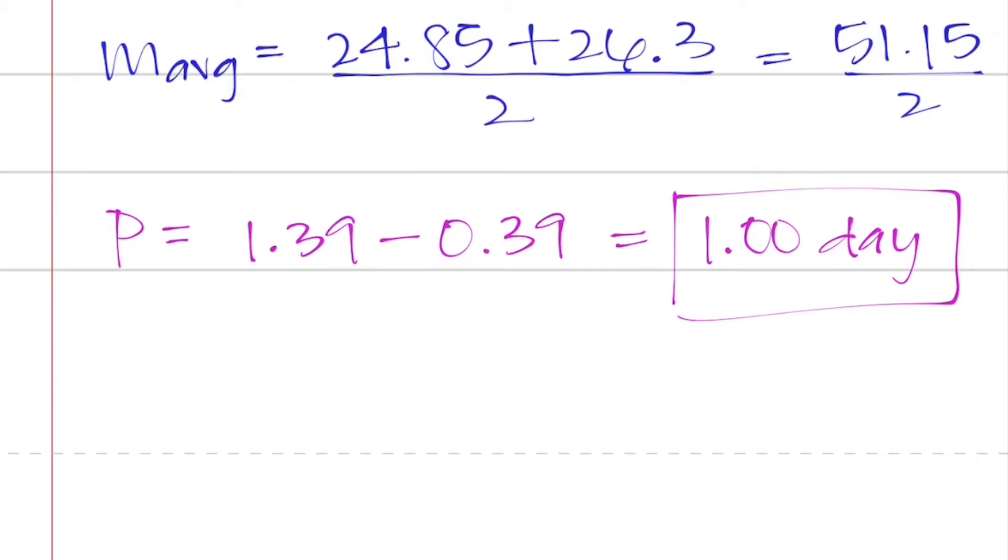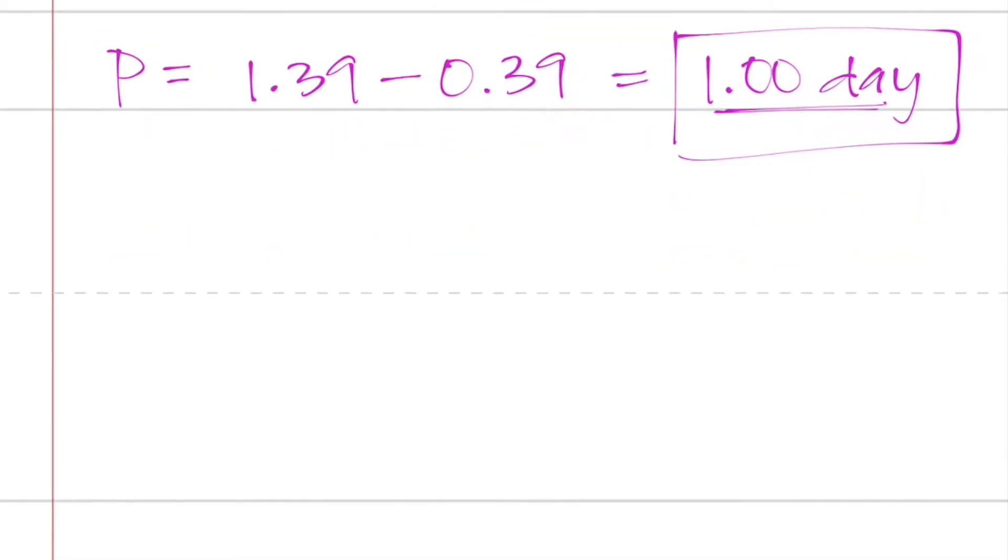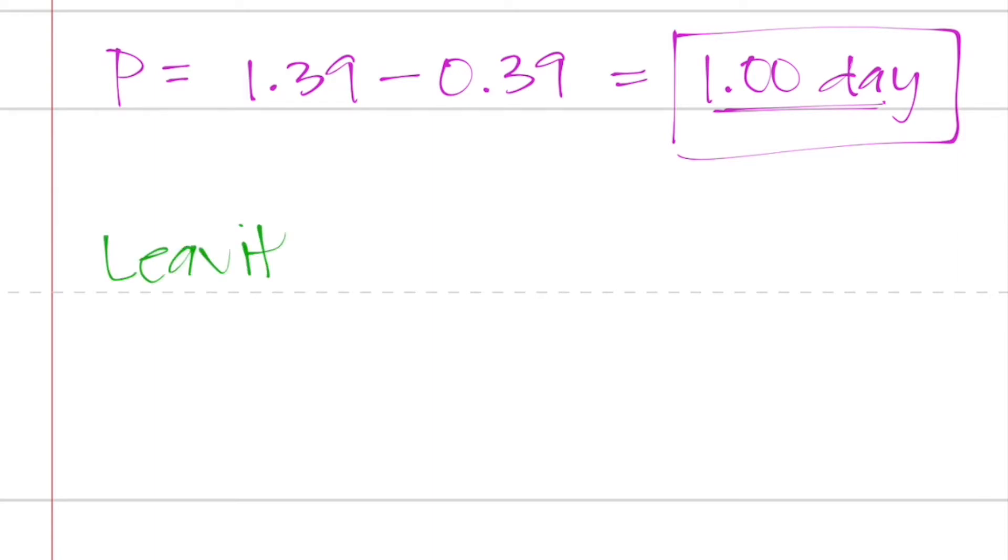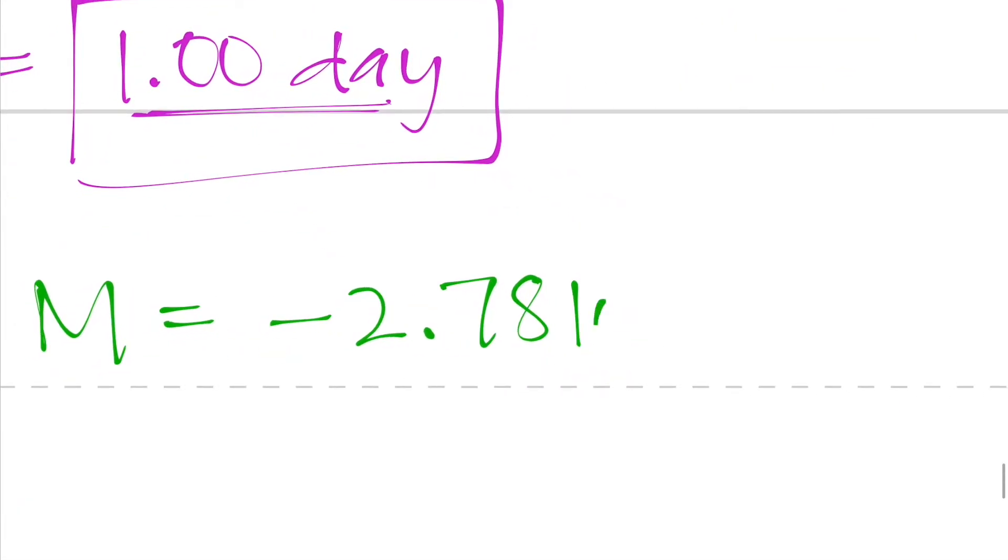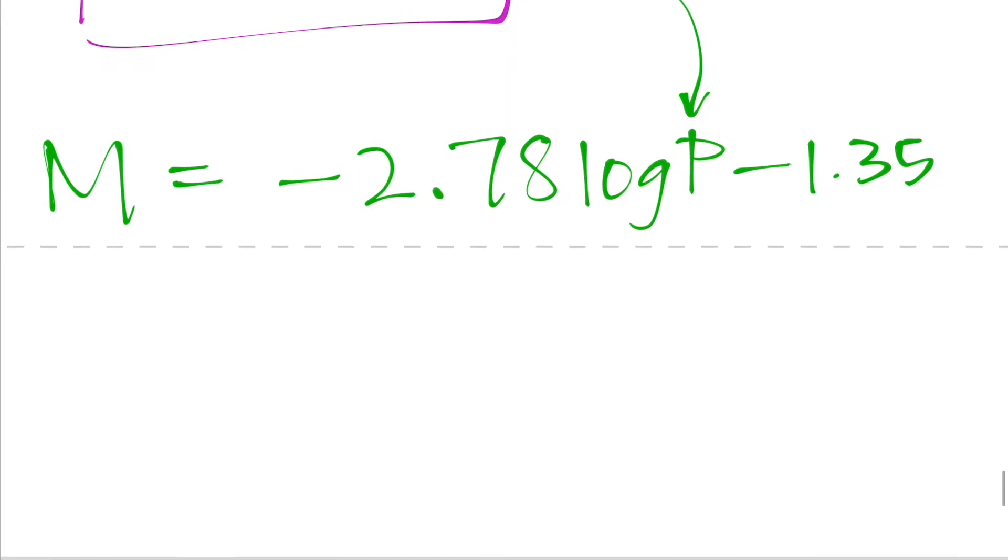So now that I found my period, I can go ahead and use the value that I just found, one day, to find the absolute magnitude using Levitt's law. So Levitt's law relates the period of the luminosity. So how long does it take to go from bright to dim to bright again? Levitt's law takes that value and it associates it with the absolute magnitude of the star. So it says capital M or the absolute magnitude of the star is equal to negative 2.78 times the log of P, which is the period here, minus 1.35. So all we really need to do now is plug in one in the place of P. So we've got negative 2.78 times the log of 1 minus 1.35.